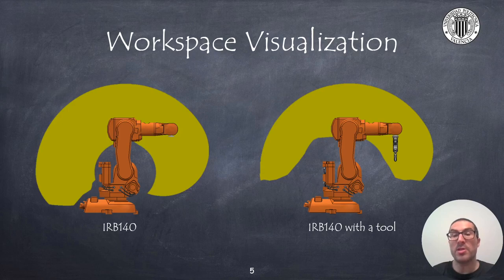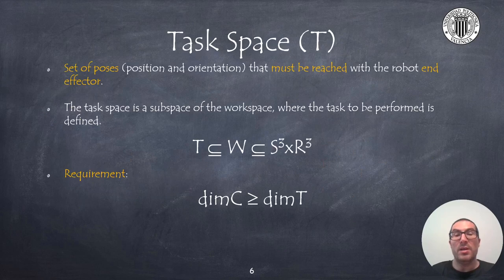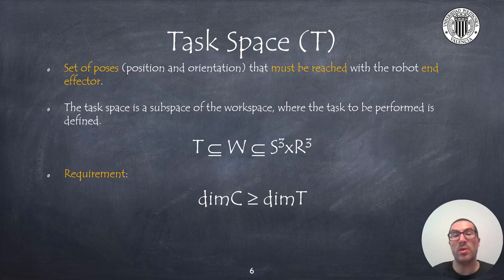The workspace with the tool is obviously smaller than the one without the tool. Another different concept is the robot task space, which is always a subspace of the robot workspace. It defines the set of positions and orientations that the robot must reach — not the ones that can be achieved, but the ones that must be reached. An important requirement is that the dimension of the configuration space is greater than or equal to the dimension of the task, so the task can be accomplished.